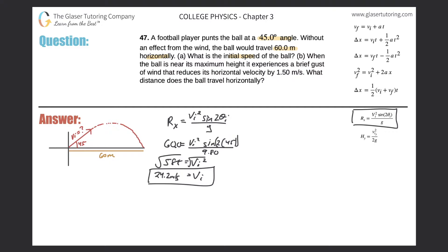Now for Part B: when the ball is near its maximum height, it experiences a brief gust of wind that reduces its horizontal velocity by 1.5 meters per second. What distance does it now travel? We need to break this problem into two parts — Part A is the first half up to the peak, and Part B is from the peak to landing.